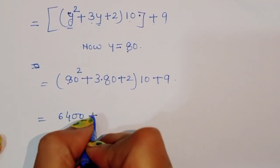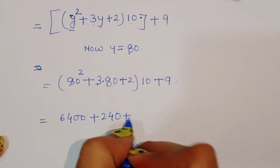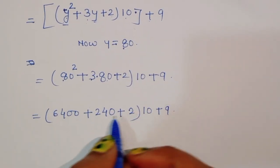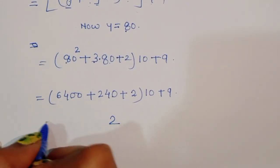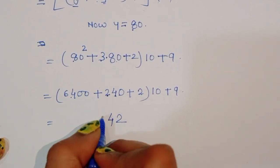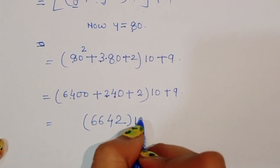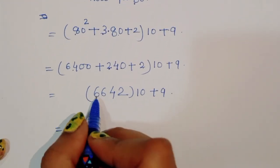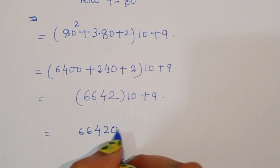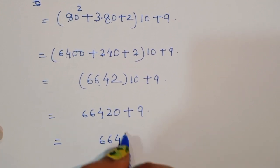80 squared is 6400. 3 times 80 is 240. Adding: 6400 plus 240 plus 2 equals 6642. Times 10 gives 66420. Plus 9 equals 66429.